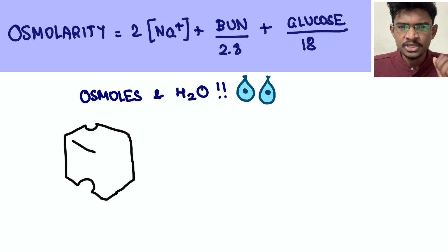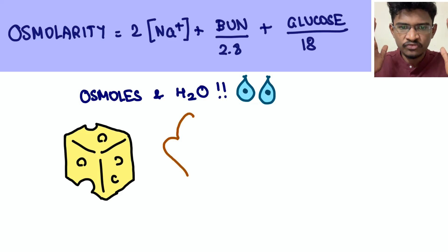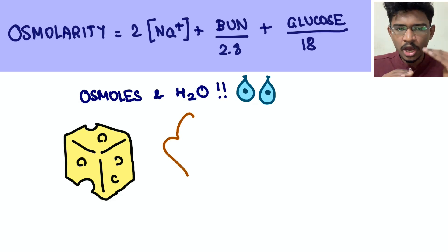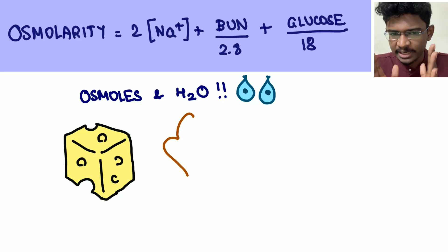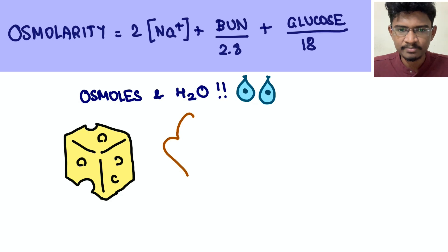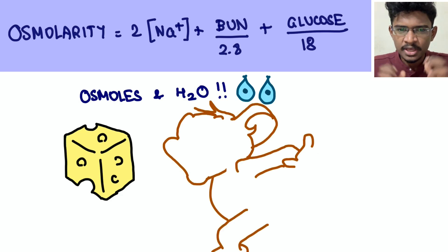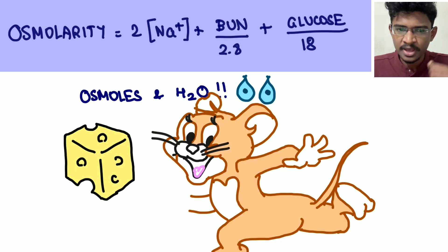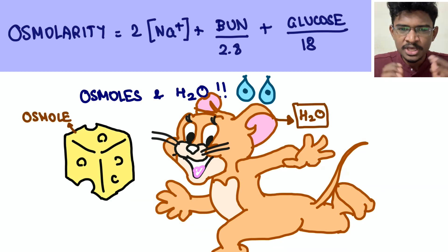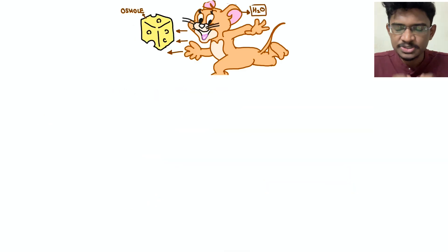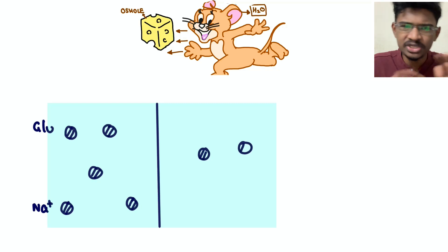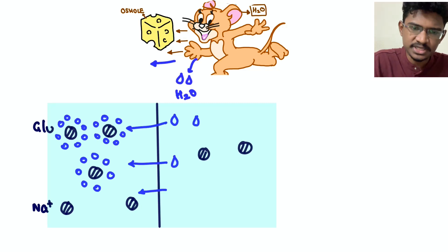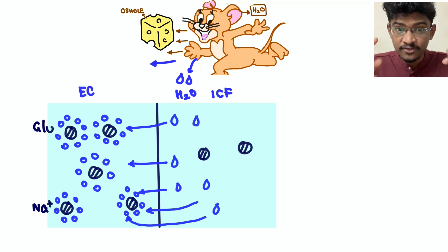Another basic concept is tonicity — it determines how water moves from one compartment to another. Think of osmoles like sodium, glucose, and BUN as cheese, and water as Jerry, who always runs behind the cheese. So wherever solute concentration is higher, water will move toward that compartment, whether it's the intracellular or extracellular compartment.